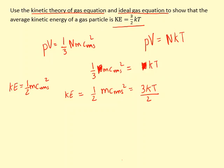If I wanted to find the kinetic energy for N number of particles, the total kinetic energy, I'd have to multiply both sides by N for the total kinetic energy.